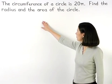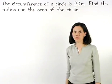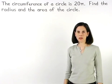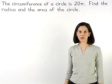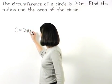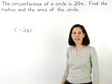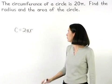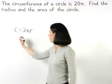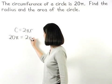The circumference of a circle is 20 pi. Find the radius and the area of the circle. To find the radius of the circle, remember that the formula for the circumference of a circle is 2 pi r, where r represents the radius of the circle. Since we're given that the circumference of our circle is 20 pi, we can set up the equation 20 pi equals 2 pi r.